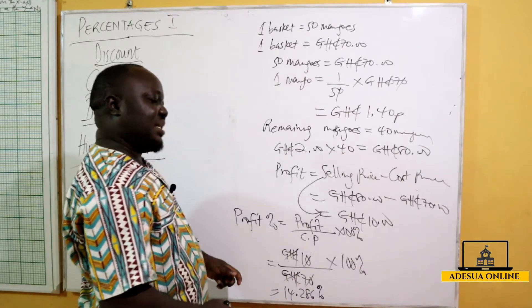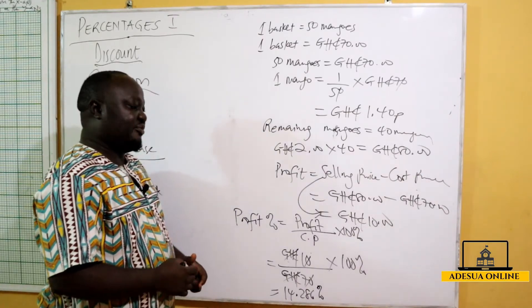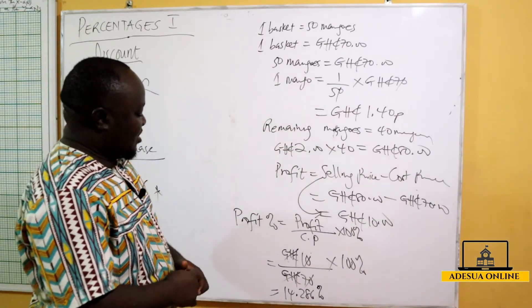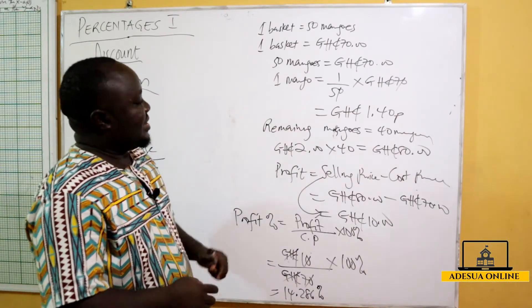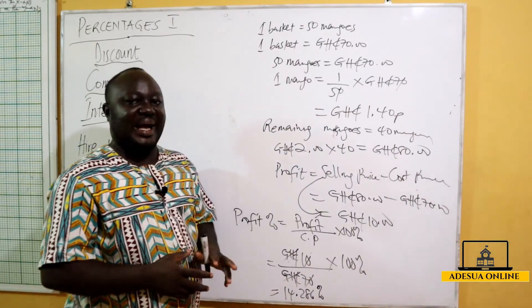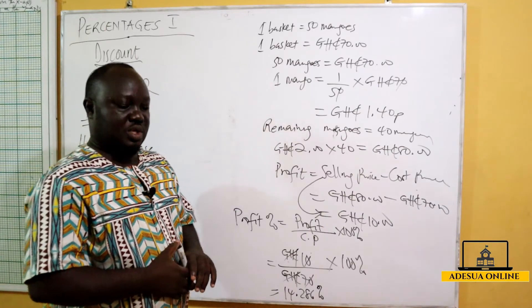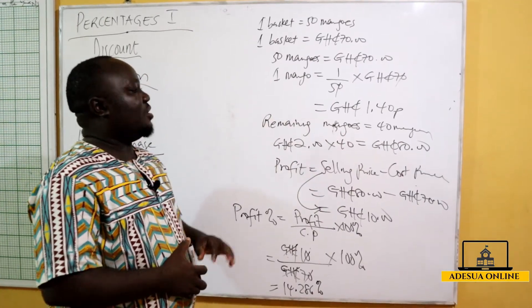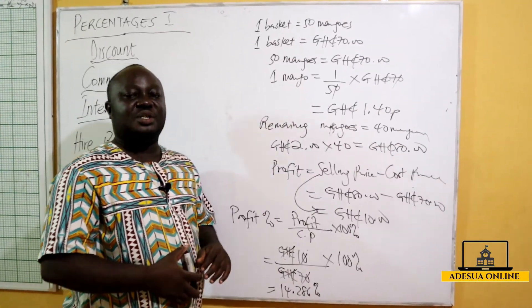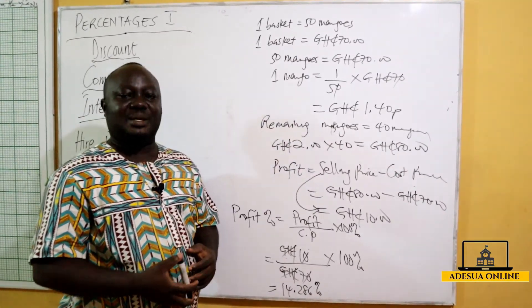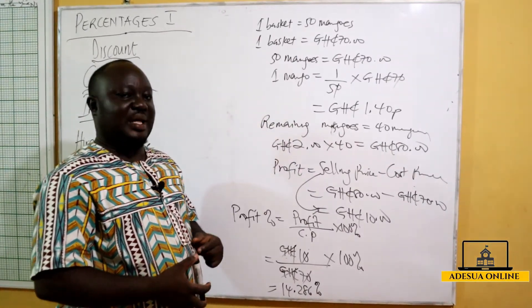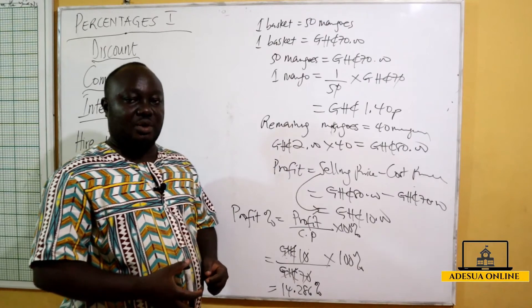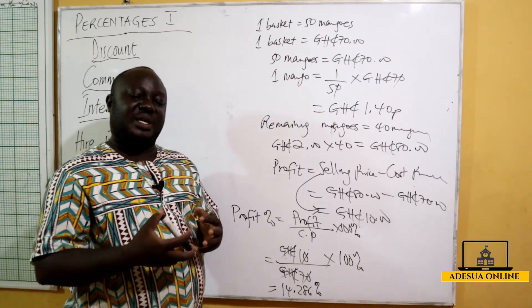So this is the percentage profit on the product I sold. With this, we are going to solve some more examples on profit and loss, and then we will pick it up from there.